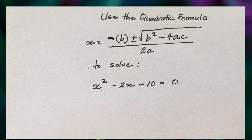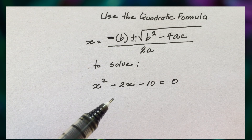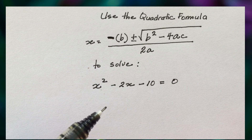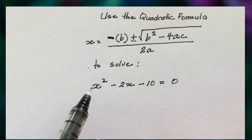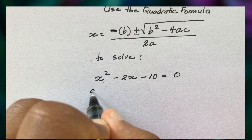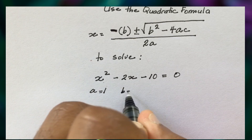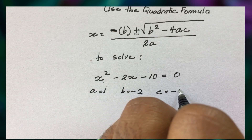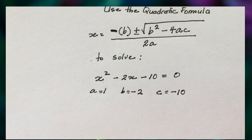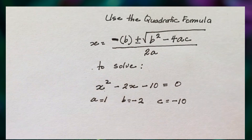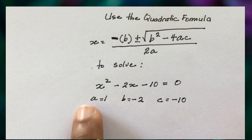The reason why we use the quadratic formula is because sometimes you won't have factors of a times c that sum to the b value. For our first example, the a value is 1, the b value is negative 2, and the c value is negative 10. A times c is negative 10. There are no factors of negative 10 that add up to negative 2, so we need to use the quadratic formula.